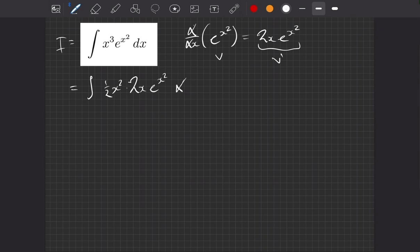We can quickly just, if we want to, sort of think about this and just double check that it does equal what we started with, e to the x squared. So if we do this, the half and the 2 make a 1.